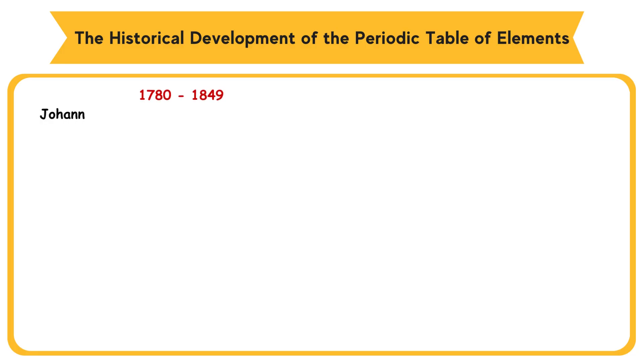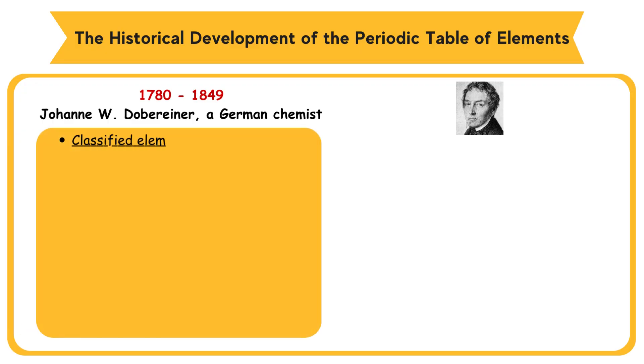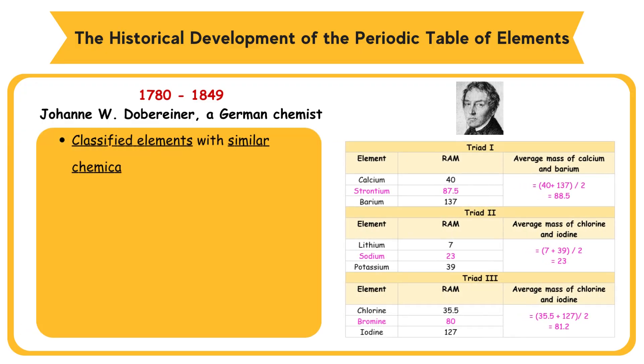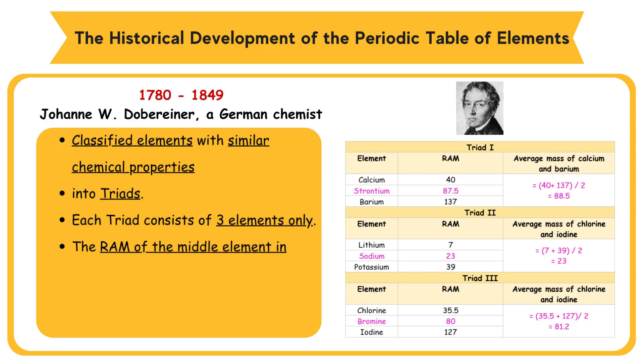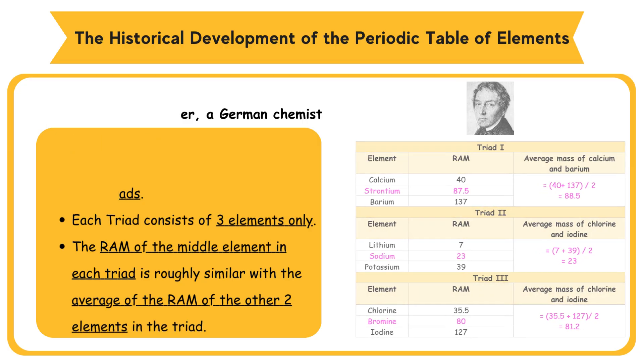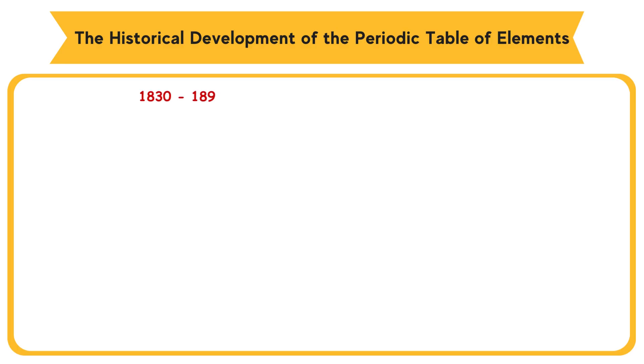1780-1849, Joanne W. Doberiner, a German chemist, classified elements with similar chemical properties into groups named triads. Each triad consists of three elements only. The relative atomic mass of the middle element in each triad is roughly similar with the average of the relative atomic mass of the other two elements in the triad.